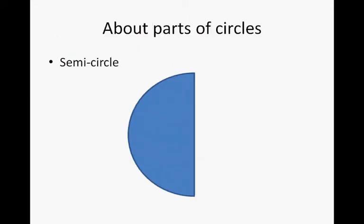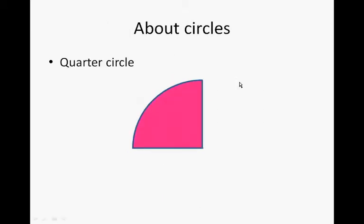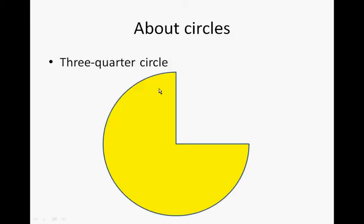This is called a semi-circle. There is a radius from the edge to the center, and that's also a radius. A quarter circle — there is a radius and there is a radius. From there to there, that's also a radius. A three-quarter circle — there's the radius and there's another radius.